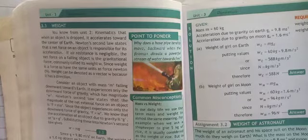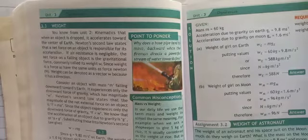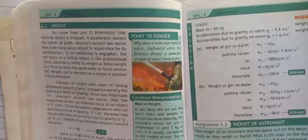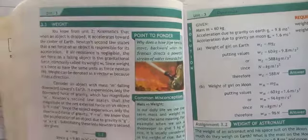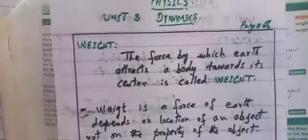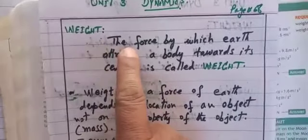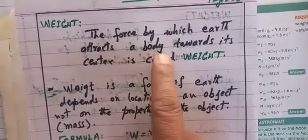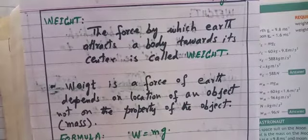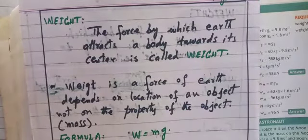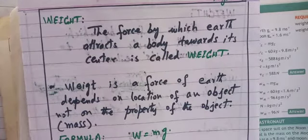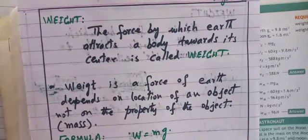So this force was named weight. Now, how do we define weight? Keeping that observation in mind, weight is a force with which the earth attracts a body towards its center. The definition written here is: 'The force by which the earth attracts a body towards its center is called weight.'